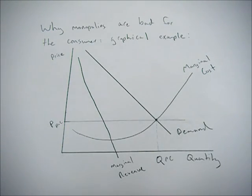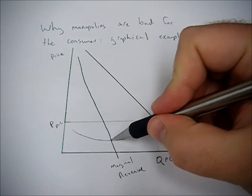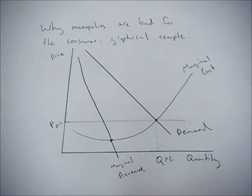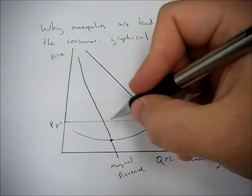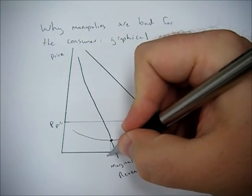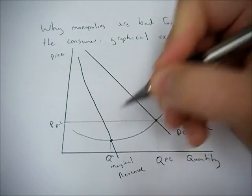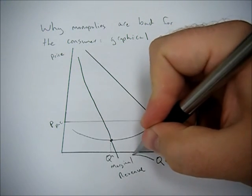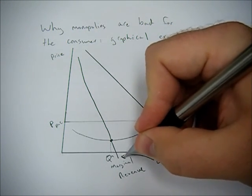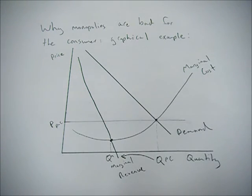So with the monopoly, they actually produce where their marginal revenue is equal to their marginal cost. So what this means is the quantity they produce is significantly less than would be produced under perfect competition.